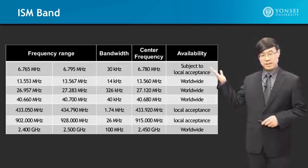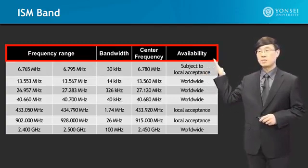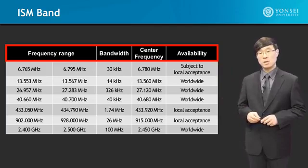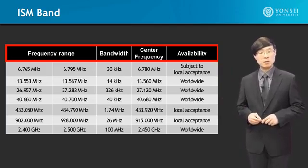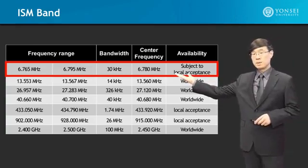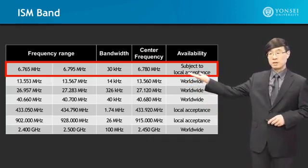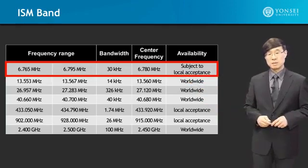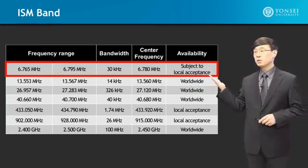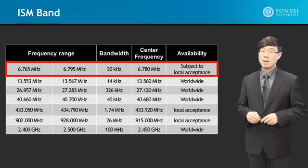For further details on the ISM band, we'll take a look at the frequency range, the bandwidth, as well as center frequency and availability — these are all critical components in determining which ISM band should be used for product development. Starting with the frequency range at 6 MHz: the range is from 6.765 MHz to 6.795 MHz, the bandwidth is 30 kHz, and this is subject to local acceptance — meaning based on the local government, this frequency may or may not be permitted.